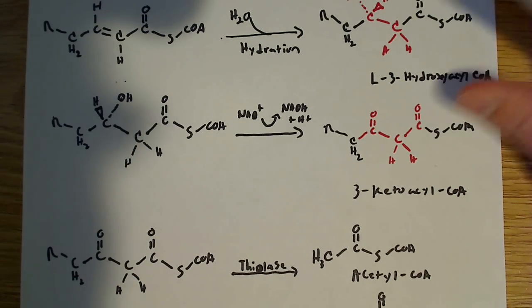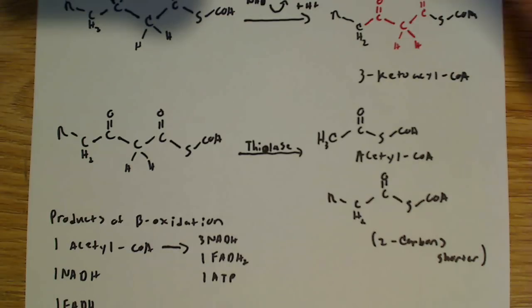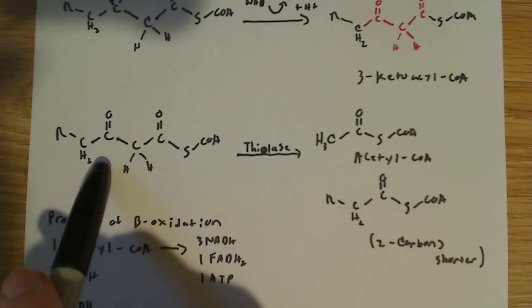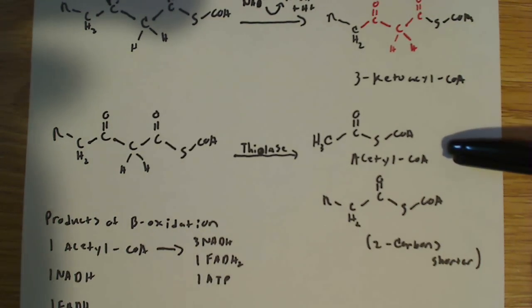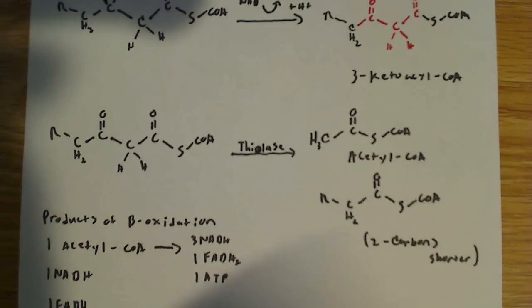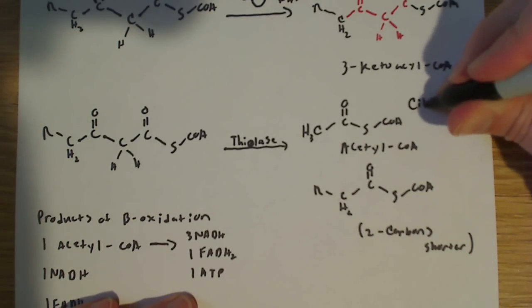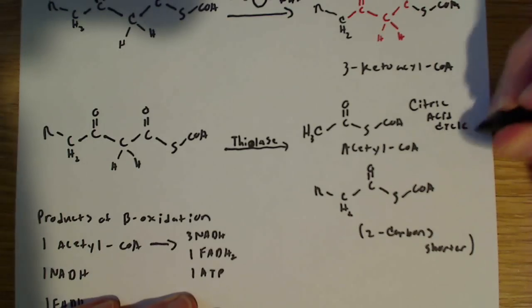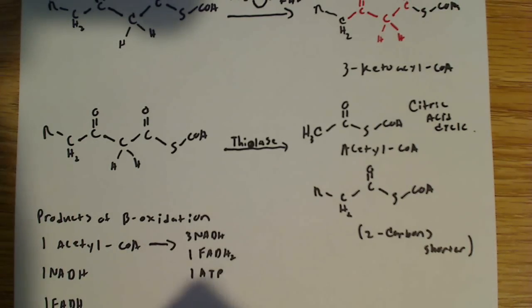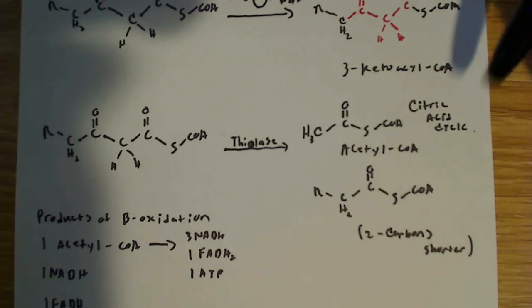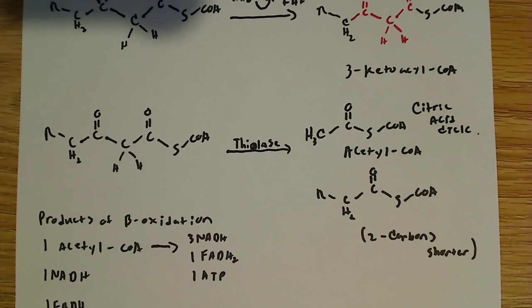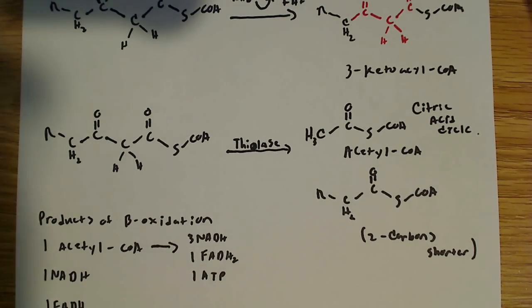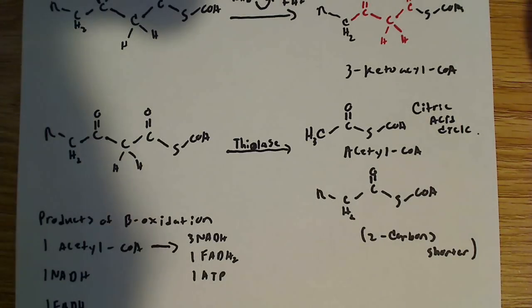Now the final reaction in this process is catalyzed by an enzyme called thiolase. And what's going to happen is we have this 3-ketoacyl-CoA, and it's going to be broken down into acetyl-CoA, which enters the citric acid cycle. So citric acid cycle, because that's what we know we want to add acetyl-CoA groups to the citric acid cycle, because it produces lots of energy. And that's why fats produce a lot of energy.